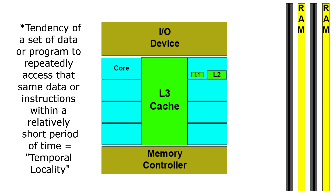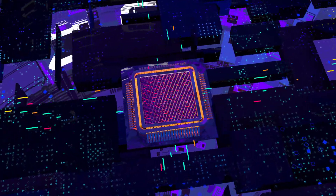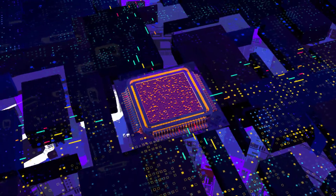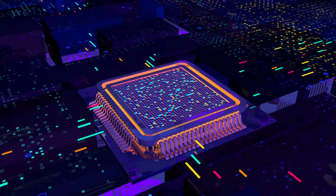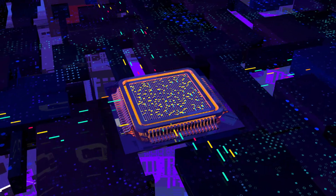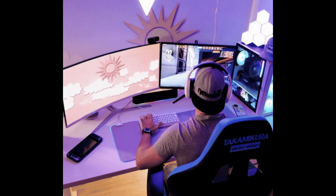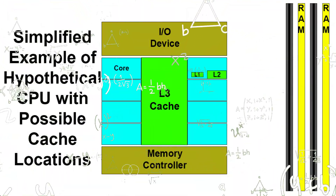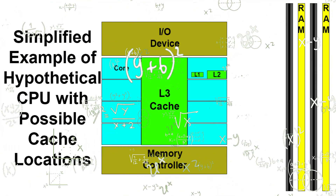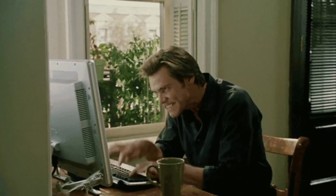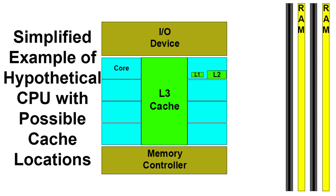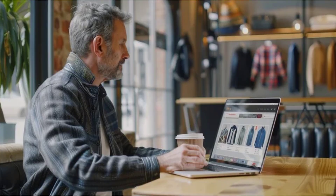Getting back to how cache impacts how you use your PC: the most obvious benefit is in gaming. After that, it helps with heavy workload productivity tasks, and least of all with simple productivity tasks. The reason for this order is that games involve processing large amounts of data and instructions, so a larger cache can lead to smoother gameplay, reduced stuttering, and higher frame rates. For productivity tasks like video editing, 3D rendering, or running large simulations, a larger cache can benefit you, just not as obviously as in gaming.